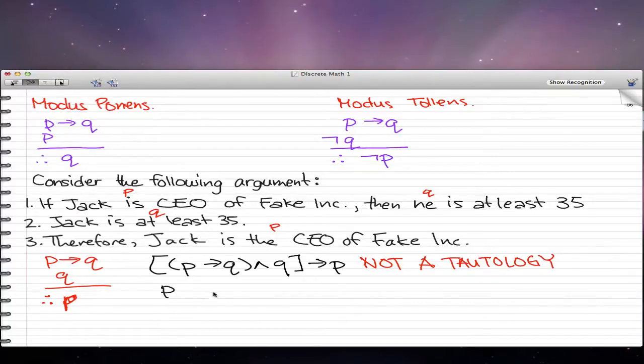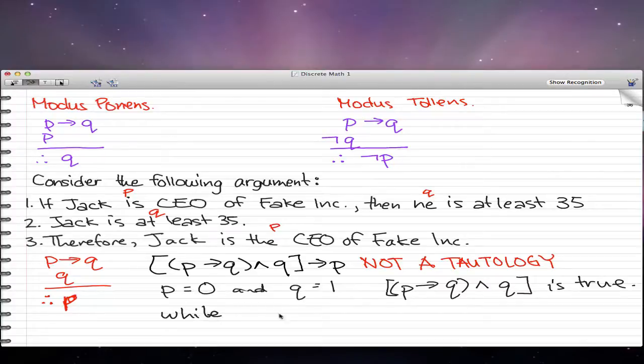Consider when P equals 0 and Q equals 1. Then the statement P implies Q, and Q, is true. But the conclusion P is false.